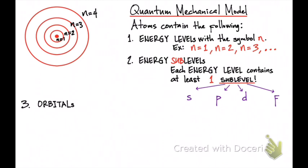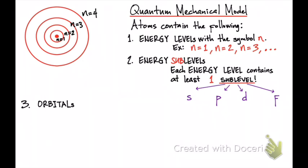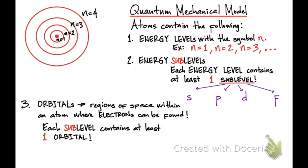Let's look at the number of orbitals per sublevel. For the S sublevel, the number of orbitals equals one. A P sublevel contains a total of three orbitals. A D sublevel contains a total of five orbitals. And an F sublevel contains a total of seven orbitals.